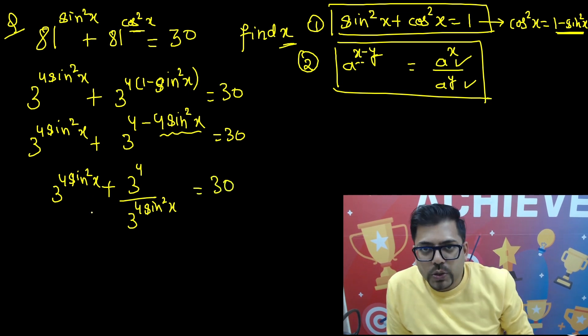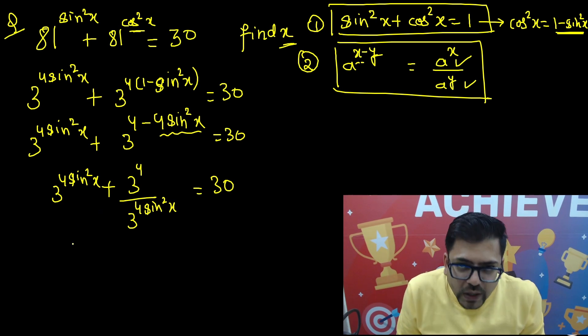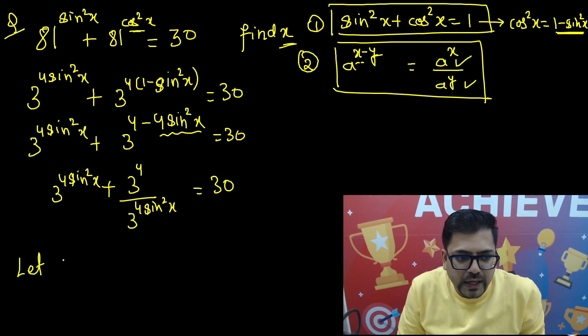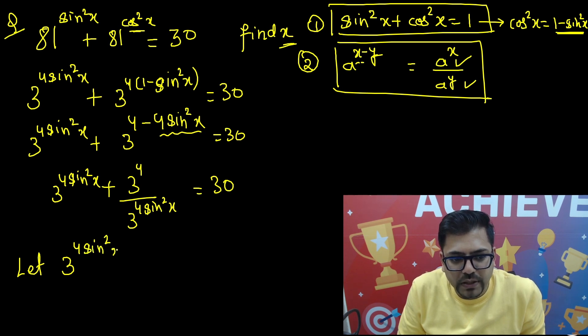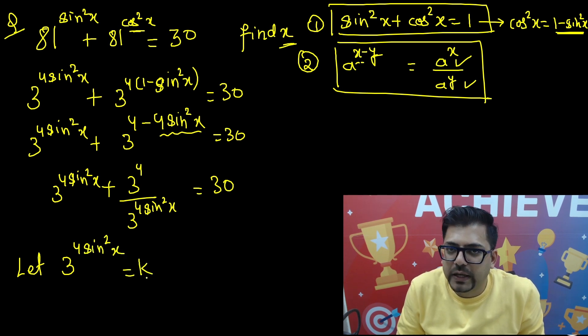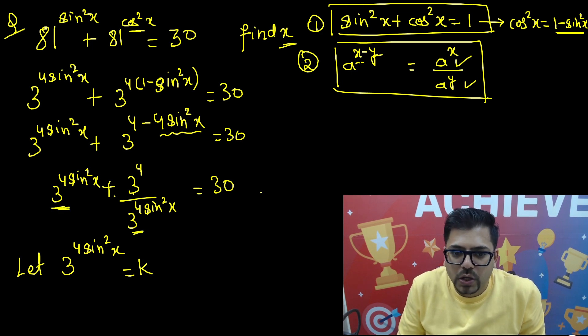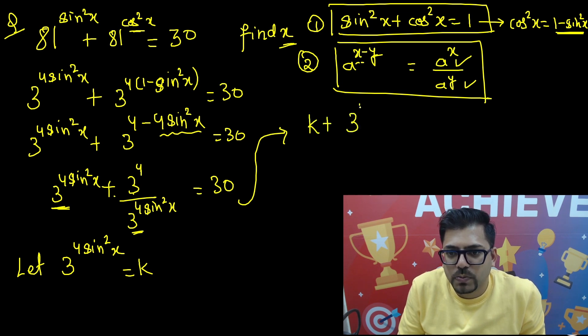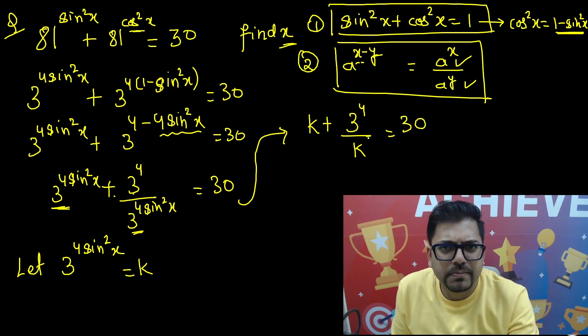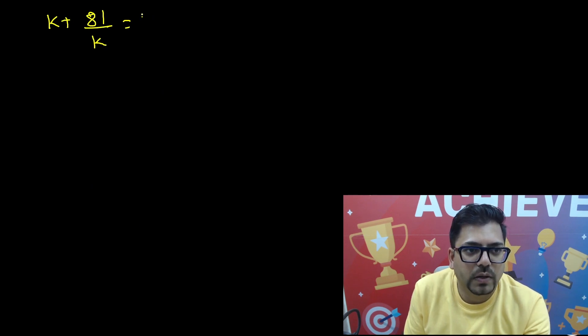After this you can't solve it directly, so we assume a substitution. Let k equal 3 raised to power 4sin²x. Then the first term is k and the second term becomes 3 raised to power 4 divided by k, which is 81 over k. So the entire equation becomes k plus 81 over k equals 30.